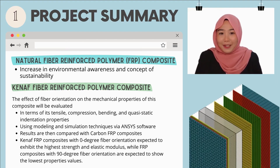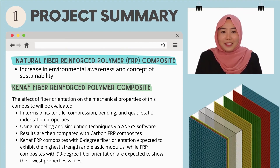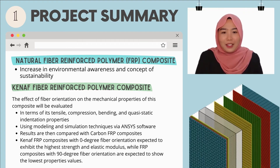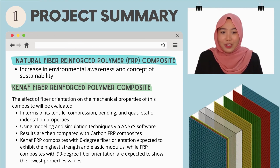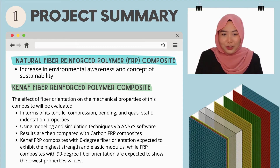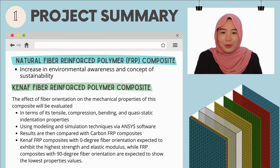It is expected that the kernel fiber reinforced polymer composite with zero degree fiber orientation will exhibit the highest strength and elastic modulus, while the kernel fiber reinforced polymer composite with 90 degree fiber orientation will show the lowest property values. This research will contribute new knowledge on predicting the strength and performance of kernel fiber reinforced polymer composite using the modeling and simulation technique.